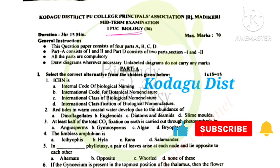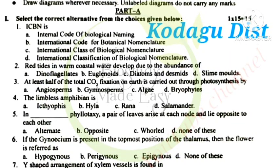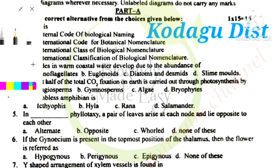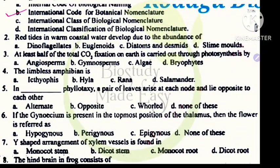It will help other district students also. The first question is ICBN full form. Option B, International Code for Botanical Nomenclature. This is the International Code for Zoological Nomenclature.